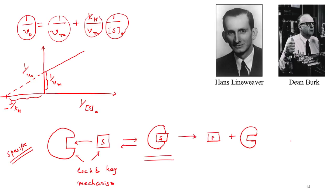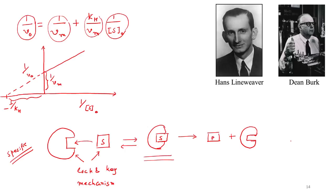Next, we'll build on the Lineweaver-Burk plot and discuss enzyme inhibition. If there is another molecule with a shape similar to the substrate — called an inhibitor — that binds to the enzyme, we'll examine what happens to the enzyme kinetics and how the Lineweaver-Burk plot of 1/v0 versus 1/S0 changes. That will be discussed in the next part.